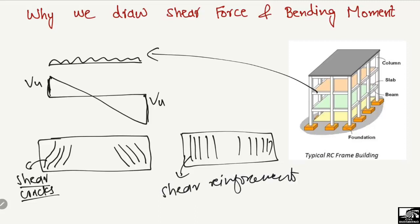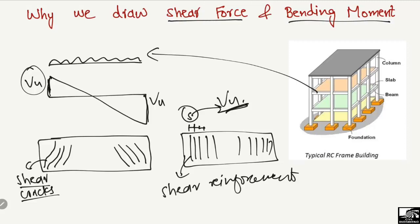To avoid these shear cracks in our beam, we provide shear reinforcement — stirrups — throughout the beam section in order to resist the shear load. The spacing of these stirrups depends upon the shear load. The more shear load acting on the beam, the less the spacing between the stirrups, and vice versa. So the main purpose of drawing the shear force and bending moment diagram is to determine the maximum shear force and provide the stirrup spacing accordingly, and to determine the maximum bending moment and provide the steel bar area accordingly.